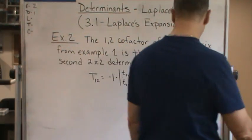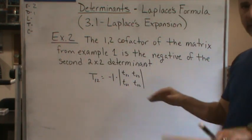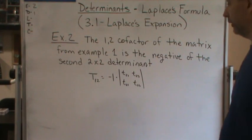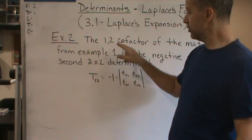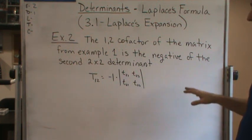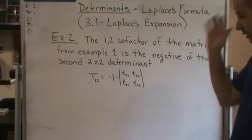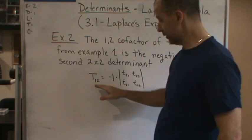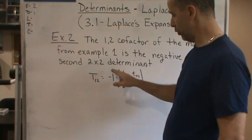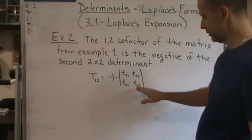Okay, so here's a quick example. This is reference to example 1. If you look at your notes from example 1, we can find that the 1,2 cofactor of the matrix from example 1 is the negative of the 2 by 2 determinant. So the cofactor T1,2 would then be negative 1 times the determinant, and then this here...